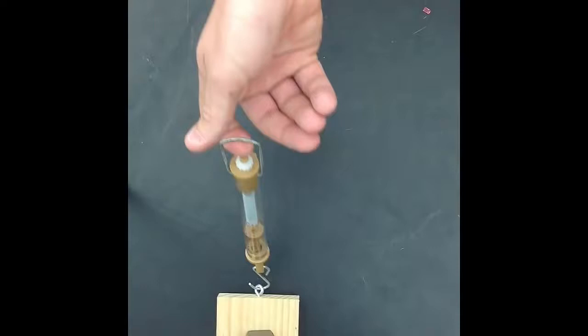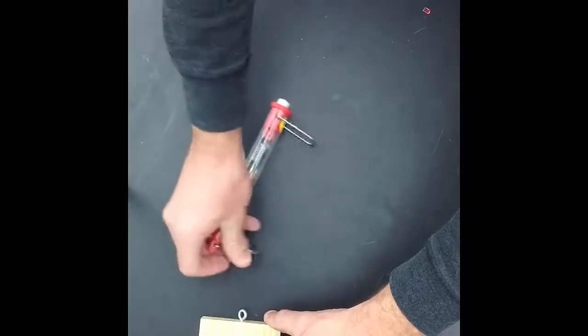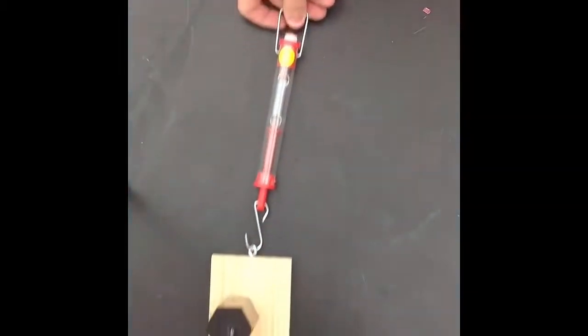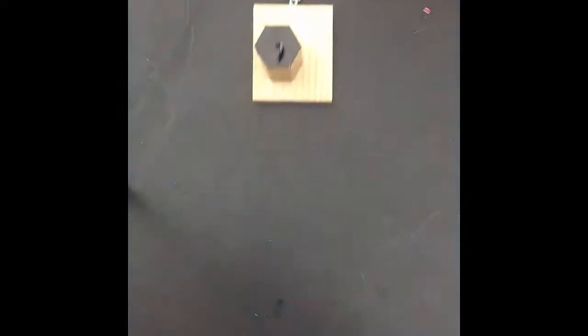Again, do not pull upwards. Only pull parallel to the table. Otherwise, you will get incorrect results. If you find that using the 10 Newton scale, the readings are going above and beyond the scale, you'll want to switch to the 20 Newton scale. Apply what you've learned about tension scales to read these correctly.